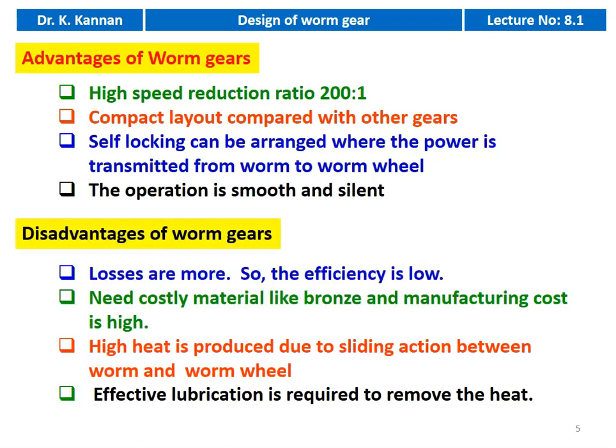Disadvantages of the worm gear drive: losses are more — power loss in the form of heat is dissipated — so the efficiency of the drive is also low. Need costly material like bronze and the manufacturing cost is also high. High heat is produced due to the sliding action between worm and worm wheel compared with other gears. Effective lubrication is required to remove the heat energy.